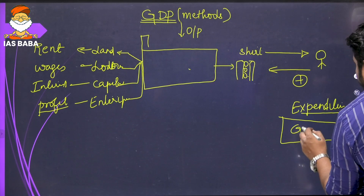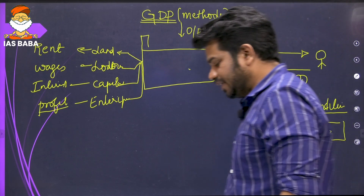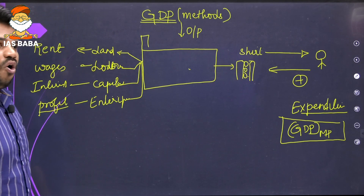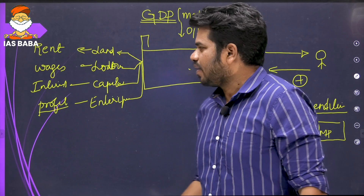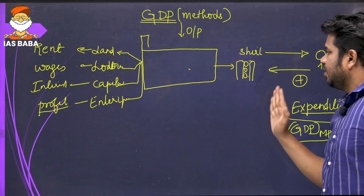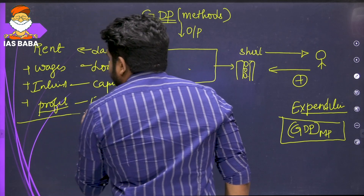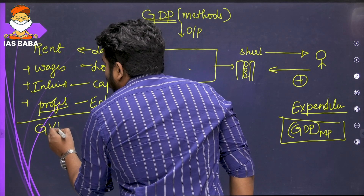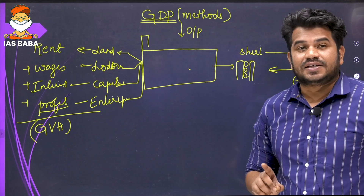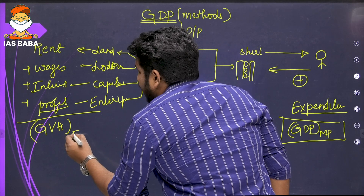The type of GDP I get through the expenditure method is GDP at market price. At the same time, if I add all the payments made to the inputs — that is, rent, wage, interest, and profit — that also gives me the output produced, because the inputs act as a proxy to the output. But in real life we pay taxes, so when I add all the input costs, I get gross value added at factor cost.